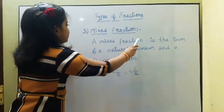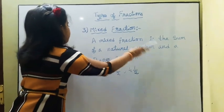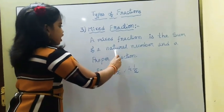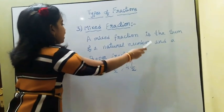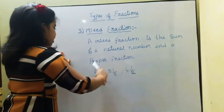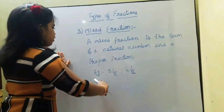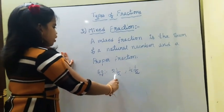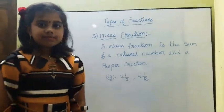The third type is mixed fraction. A mixed fraction is the sum of a natural number and a proper fraction. For example: 2 and 4 upon 4.